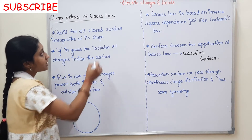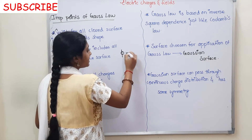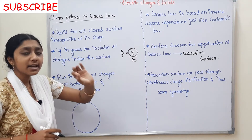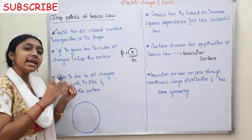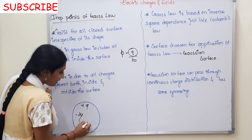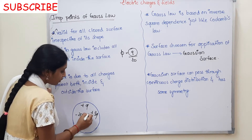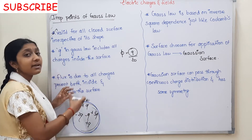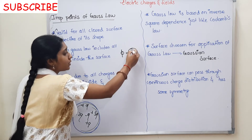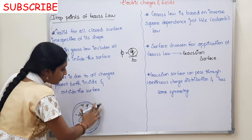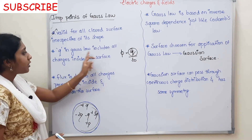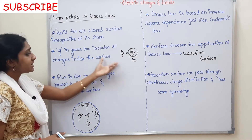The second point is that flux (φ) is equal to q by epsilon₀. Here, q is nothing but the sum of all the charges present inside the surface. So q in Gauss's Law includes all charges inside the closed surface.